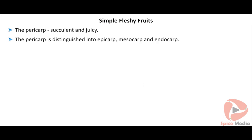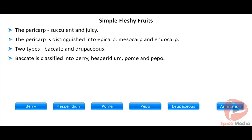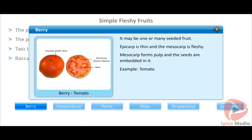The pericarp is succulent and juicy when fully ripe. The pericarp is distinguished into three parts: epicarp, mesocarp, and endocarp. Baccate and drupaceous are the two types of fleshy fruits. Baccate is classified into berry, hesperidium, pome, and pepo. It is a one or many-seeded fruit; the epicarp is thin and the mesocarp is fleshy, forming an edible pulp in which seeds are embedded.